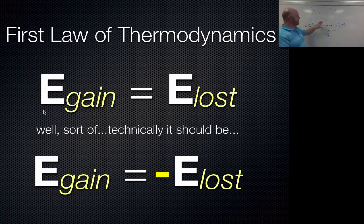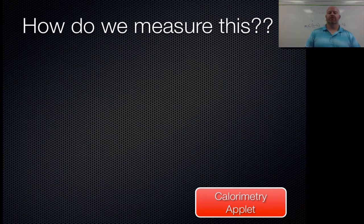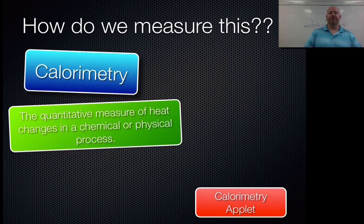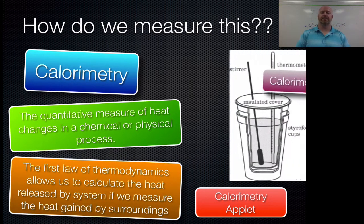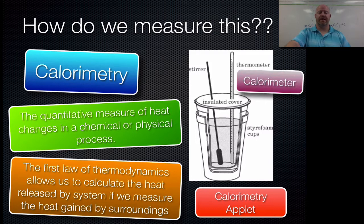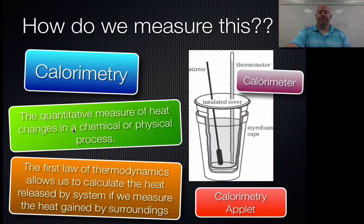This equation defines the process called calorimetry. Calorimeters come in all shapes and sizes. Some of the simplest are coffee cup calorimeters — two styrofoam coffee cups put together, insulated, with a thermometer and a way to stir. This makes a really good insulating calorimeter. Calorimetry quantitatively measures heat changes by recording mass, temperature, and so forth. Because of the first law of thermodynamics we can solve for unknown values using this process.